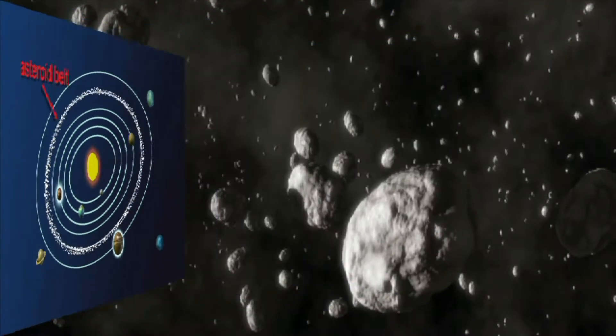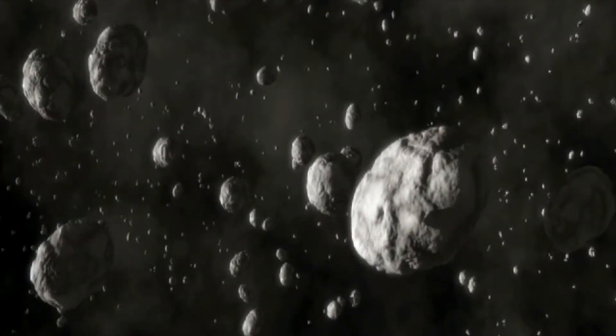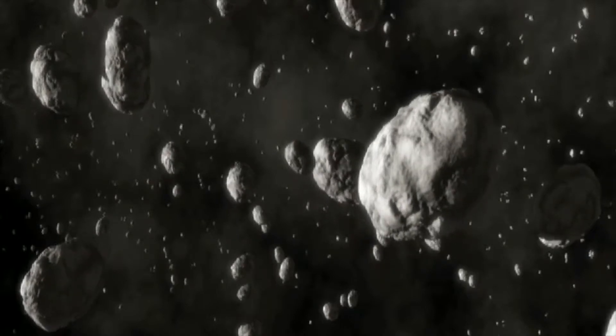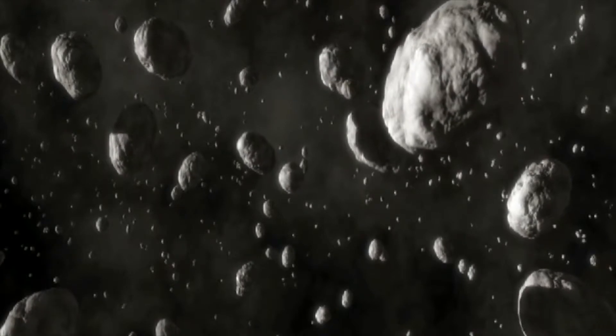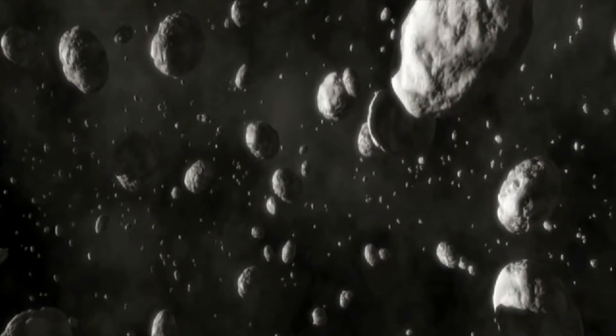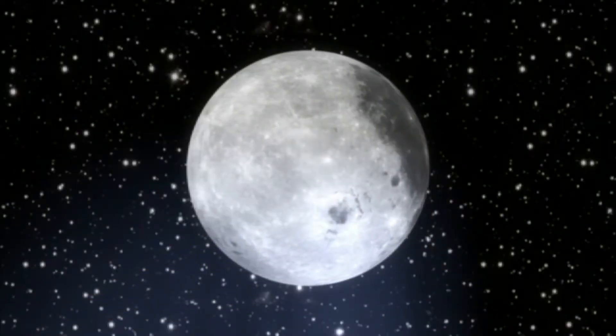The asteroid belt probably contains millions of asteroids. We have yet to identify them all. However, if they were all squashed into one planet, it would be smaller than our moon.